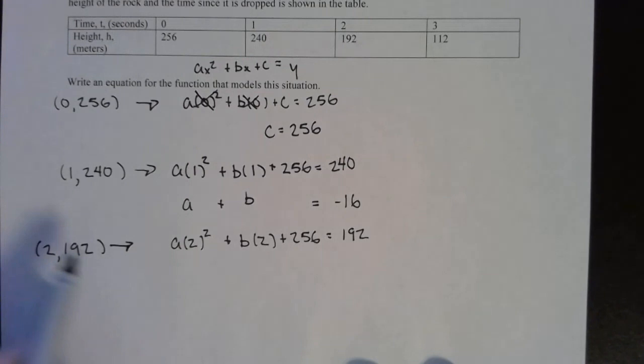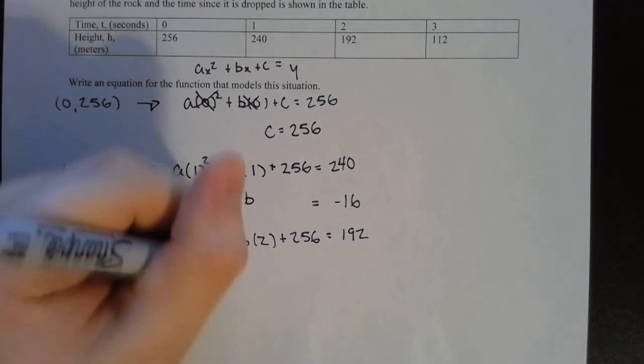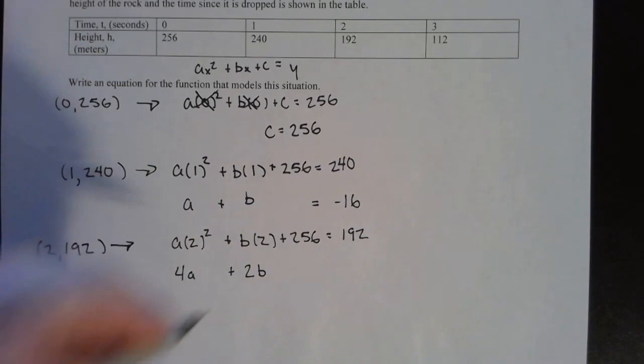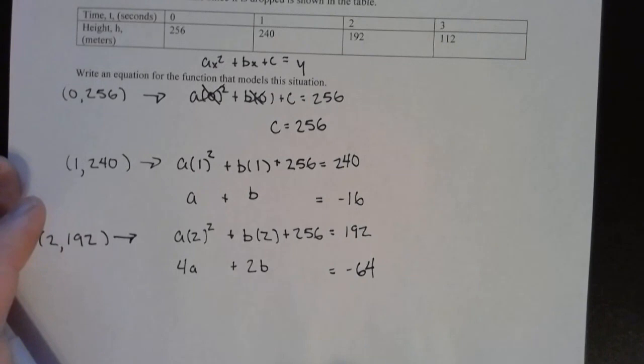So now plugging in this information into our general form, I came up with this. I can simplify this a little bit here. 2 squared is 4. 4 times a is 4a. I can change this around to 2b. And I can subtract the 256 again to the other side. 192 minus 256 is negative 64.